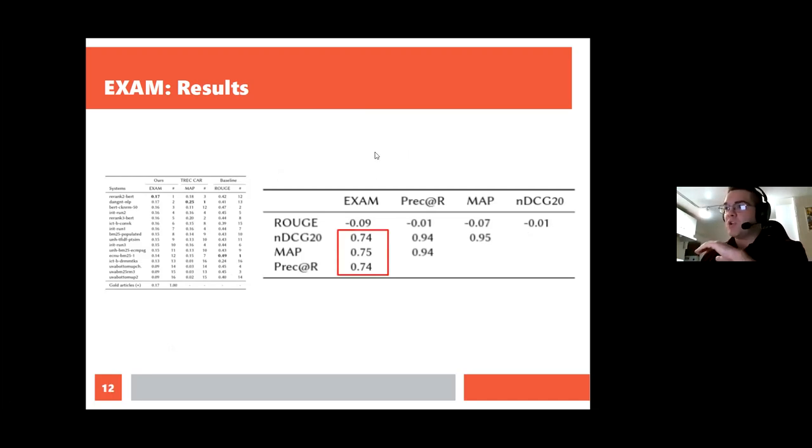You can see that EXAM is correlating really well with the Cranfield-style evaluations of MAP, precision at R, and NDCG at 20 with the rank of 0.74. Spearman's rank ranges between one and negative one, where one is strong correlation, negative one is strong anti-correlation. We're definitely on the strong correlation side of things. By contrast, ROUGE is relatively uncorrelated with not only the Cranfield-style evaluations but EXAM, which lends some additional credence to EXAM measuring the same kind of information that these Cranfield-style evaluations are measuring.